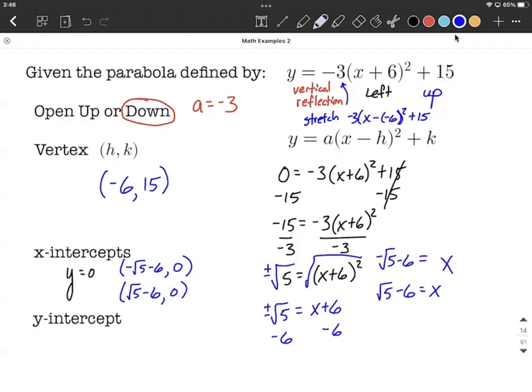Last thing we need to find is the y-intercept. Well the y-intercept is always going to occur whenever x equals 0. So what I'm going to do is go ahead and replace the x on the right-hand side of the original function with 0.